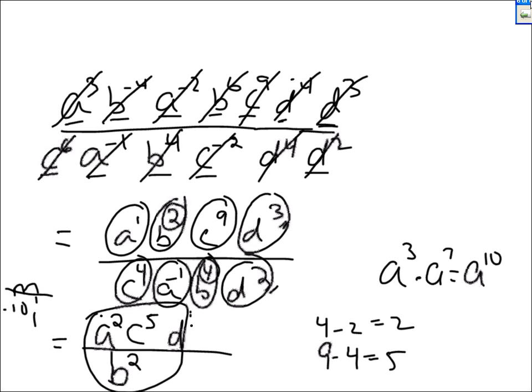Of course, if you have exactly the same thing on top and on the bottom, you can cross them right out — you can do that whenever you see it. That completes the section on negative exponents.